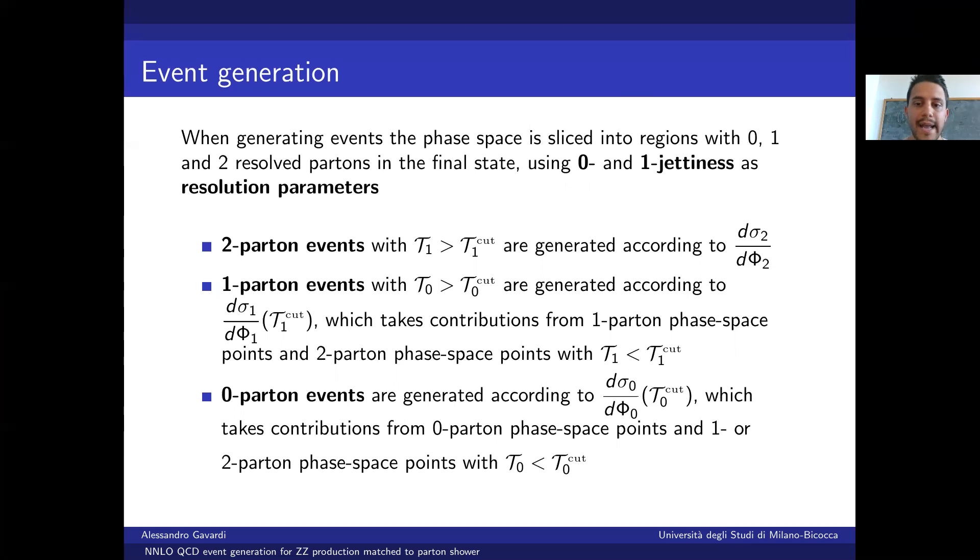Broadly speaking, one can think of zero and one-jettiness as two parameters that tell us how close a configuration is from being a zero or one-parton configuration. Just to give an example, if we consider a matrix element evaluated at a phase-space point with one final state parton, that matrix element will contribute to the generation of one final state parton event in Geneva only if zero-jettiness will be above a certain threshold, which we will call tau0 cut.